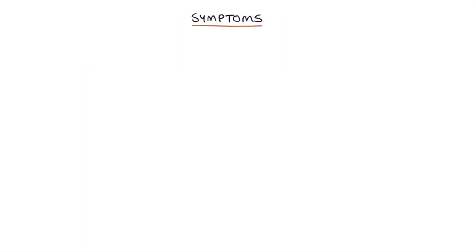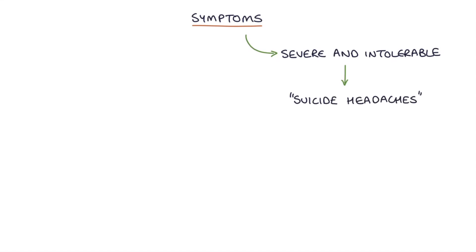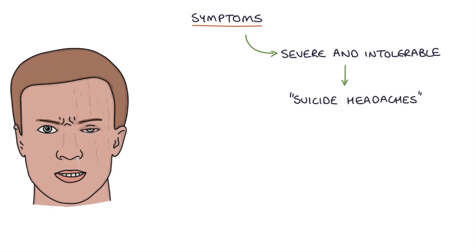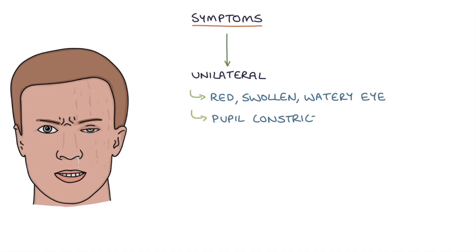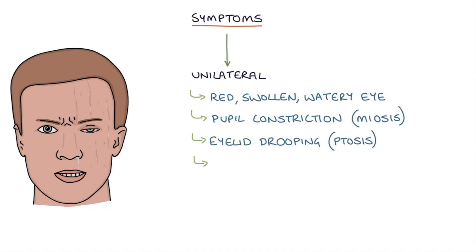So what are the symptoms? Cluster headaches are often described as the most severe and intolerable pain in the world. They're sometimes referred to as suicide headaches due to the severity of the pain. Symptoms are all typically unilateral, with a red, swollen, and watery eye, pupil constriction — which is called miosis — eyelid drooping — which is called ptosis — nasal discharge, and facial sweating on one side.